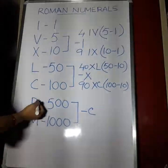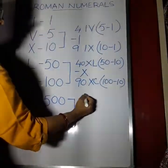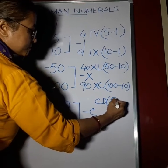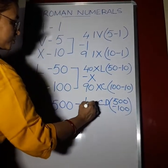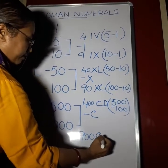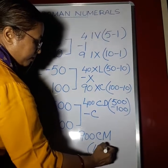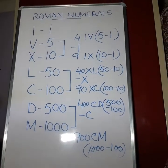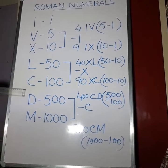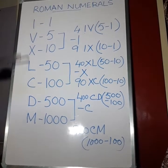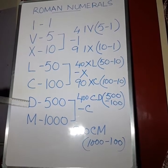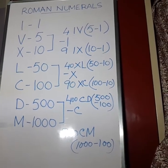We can subtract 100 from 500, giving us 400, written as CD. To represent 900, we subtract 100 from 1000, written as CM. So to summarize: I, X, C, and M can be repeated; I, X, and C can be subtracted; while V, L, and D cannot be repeated and cannot be subtracted.